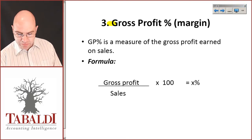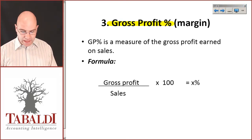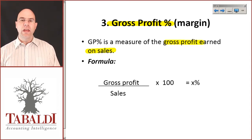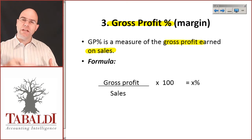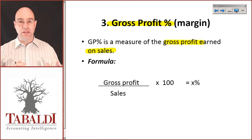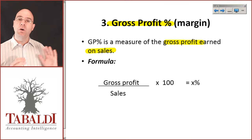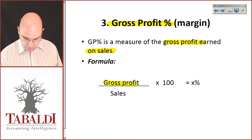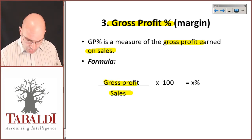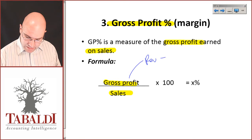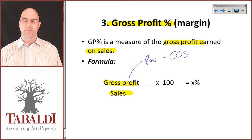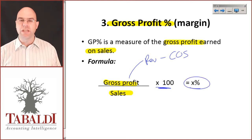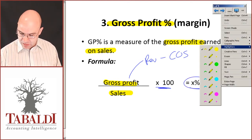Then we look at the gross profit percentage. GP is a measure of the gross profit earned on sales. The idea is to look at this percentage year after year, comparing your company to prior periods or to other businesses. The formula is gross profit over sales — remember, gross profit is revenue minus cost of sales — multiplied by 100 to get a GP percentage. Learn that formula as well. Very important.